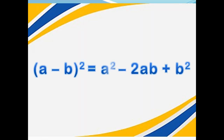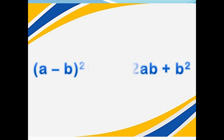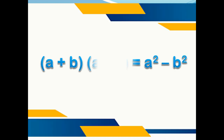A minus B, the whole square, is A square minus 2AB plus B square.